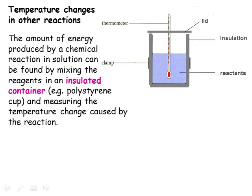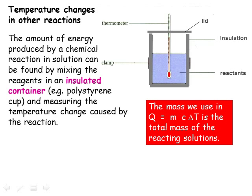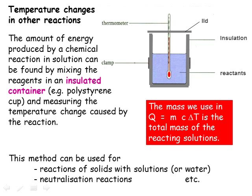The use of calorimetry is not limited to exothermic reactions when fuels and foods are burnt. We can measure the temperature change when many different reactions take place, so long as we know the mass of the reactants and the specific heat capacity — which for solutions will still be approximately 4.2 joules per gram per degree C. Then we can work out Q, the energy released or taken in during the reaction, and if we know the number of moles that reacted, we can calculate the molar enthalpy change delta H.